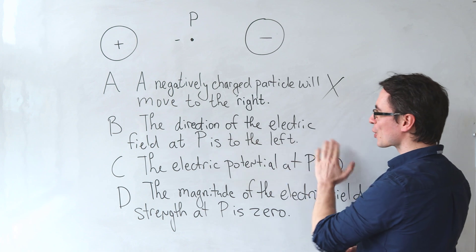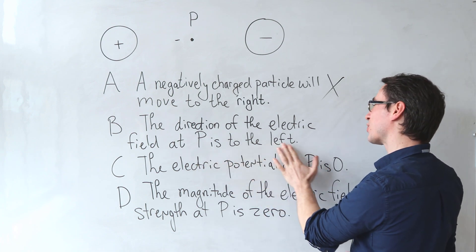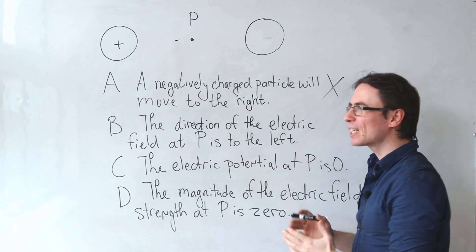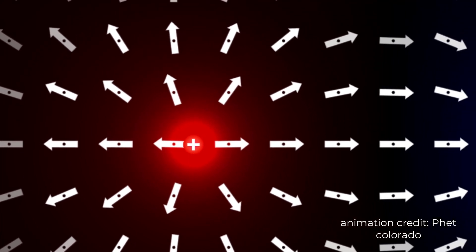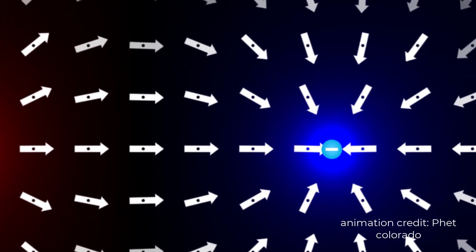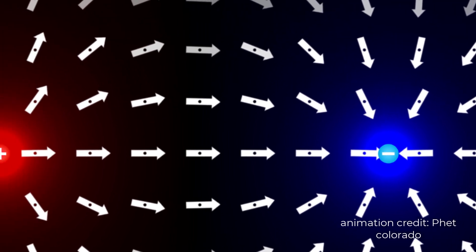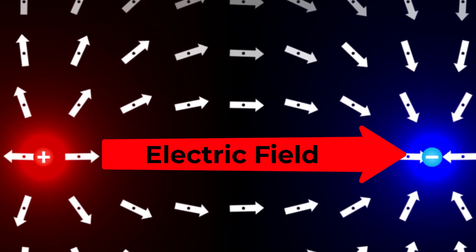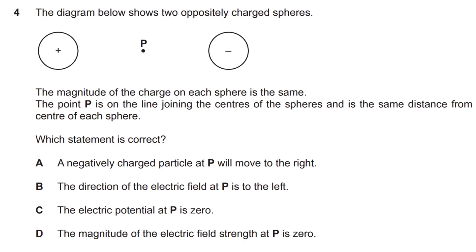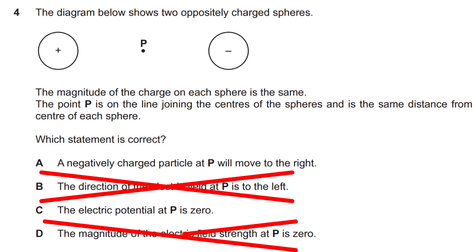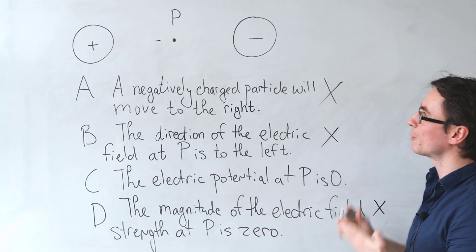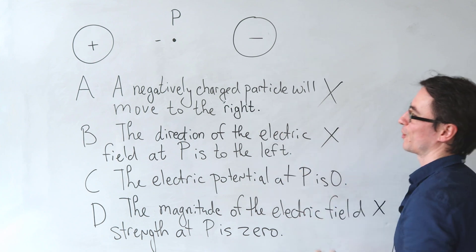Next one, the direction of the electric field at P is to the left. Well, remember electric fields come out of a positive charge and into a negative charge, meaning that the net direction of the electric field at P will be to the right. This means that B cannot be correct, but also it means that D cannot be correct because the magnitude is not zero. There will be some electric field which is going to the right.